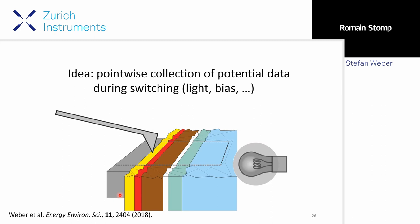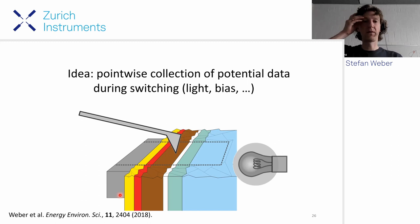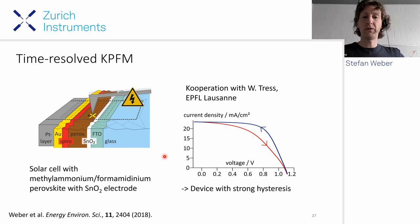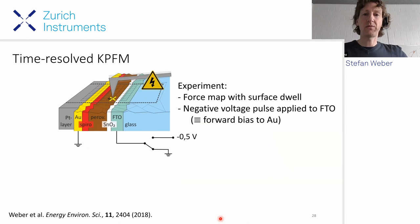What we can do instead is turn this around: position the tip at a certain position, record the dynamics with fixed tip position, then move on to the next point. Then we have a dataset that contains the entire dynamics of the system, and we can reconstruct movies of the potential difference. We used a device from EPFL collaboration with decent efficiency and pronounced hysteresis. We hacked the force mapping system on our Asylum MFP3D. That allows surface trial: you approach the tip, leave it at the surface for certain time, and do experiments. In this case we just applied a voltage.